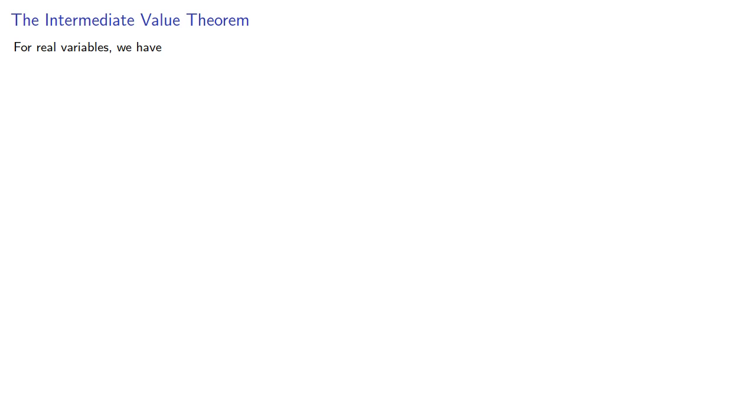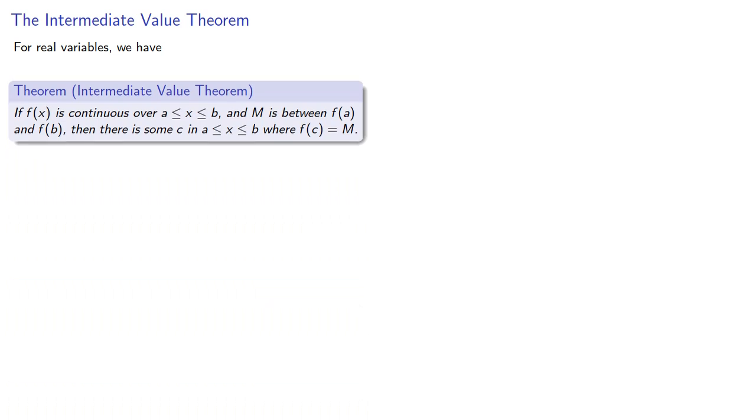For real variables, we have the intermediate value theorem. If f of x is continuous over an interval and m is somewhere between the values of the function at the endpoints, then there's some c in the interval where our function takes on the value m.